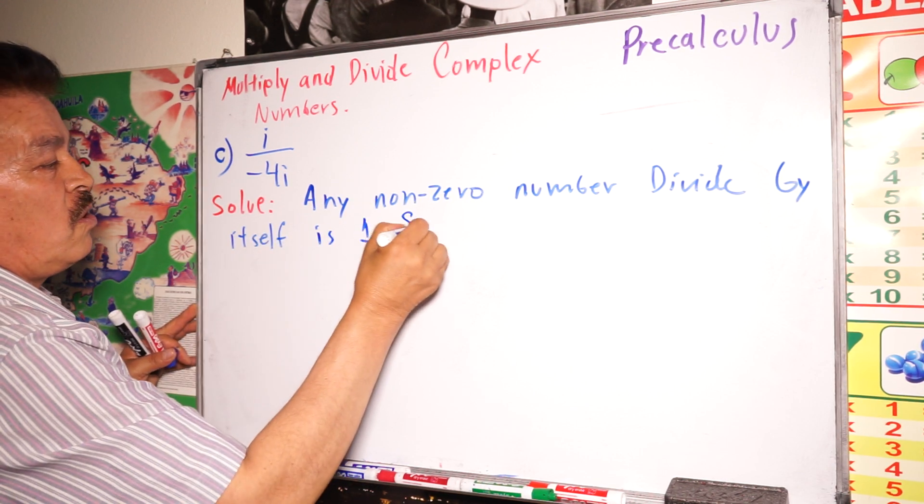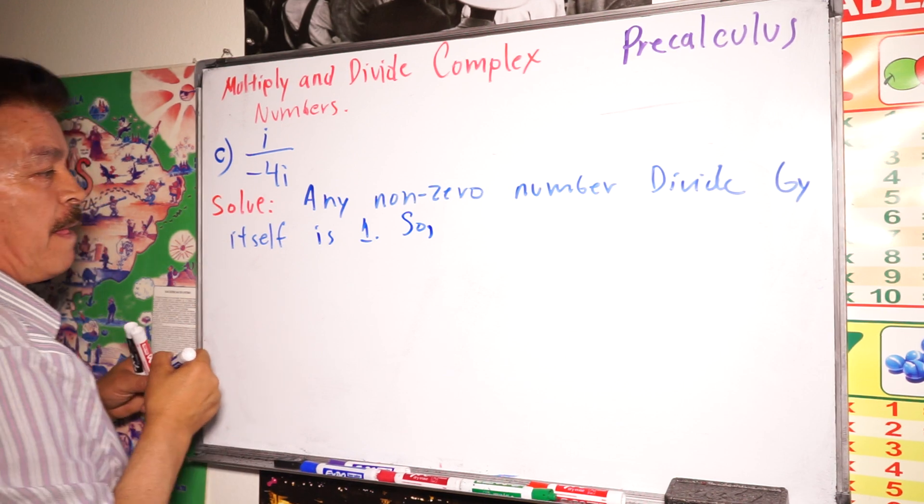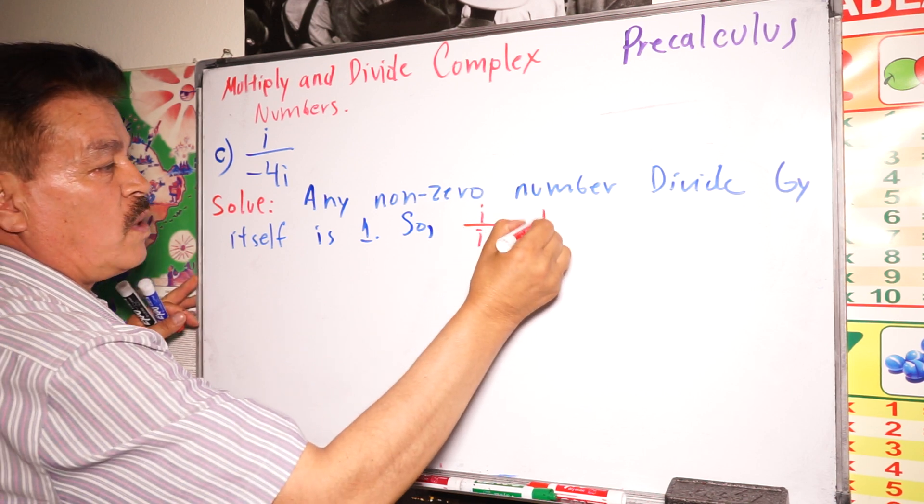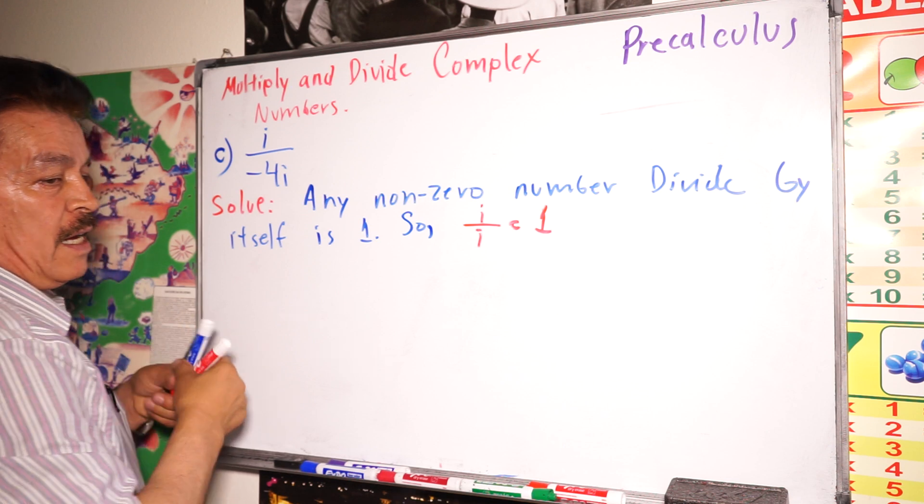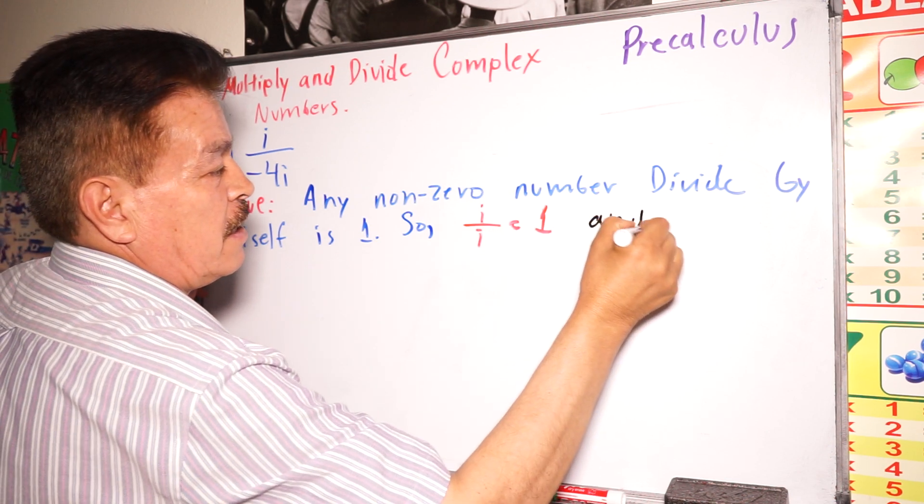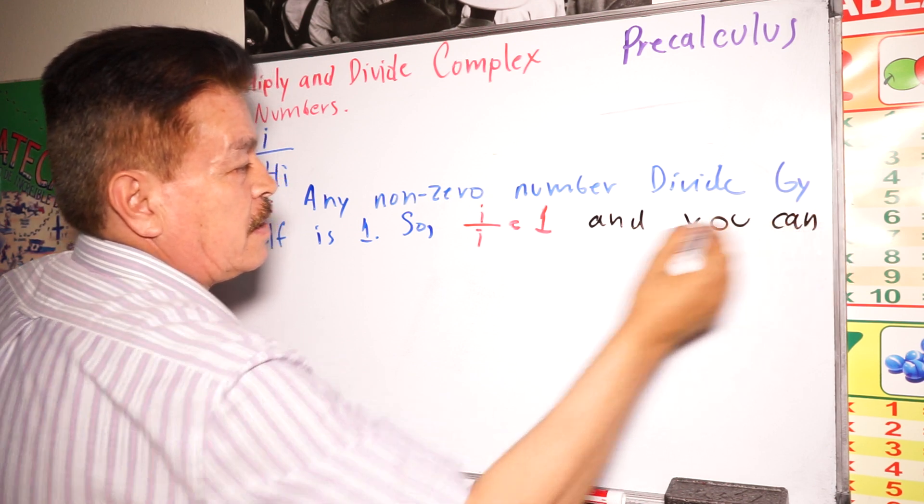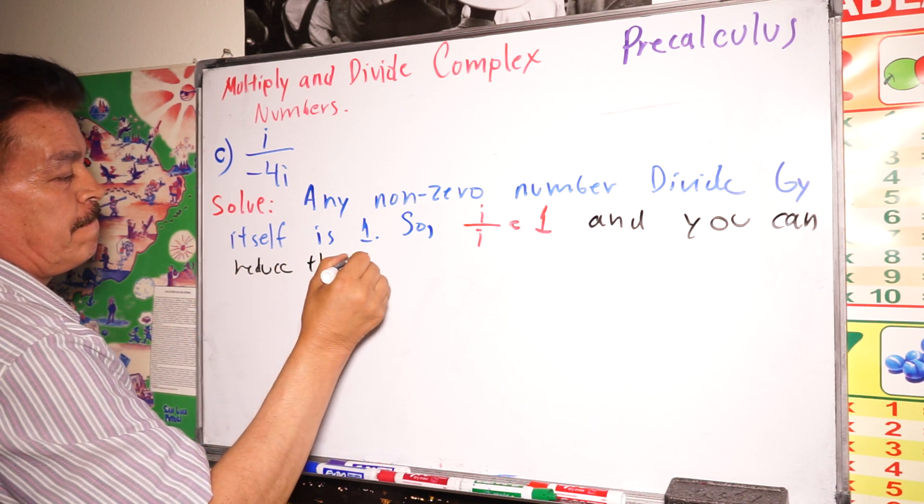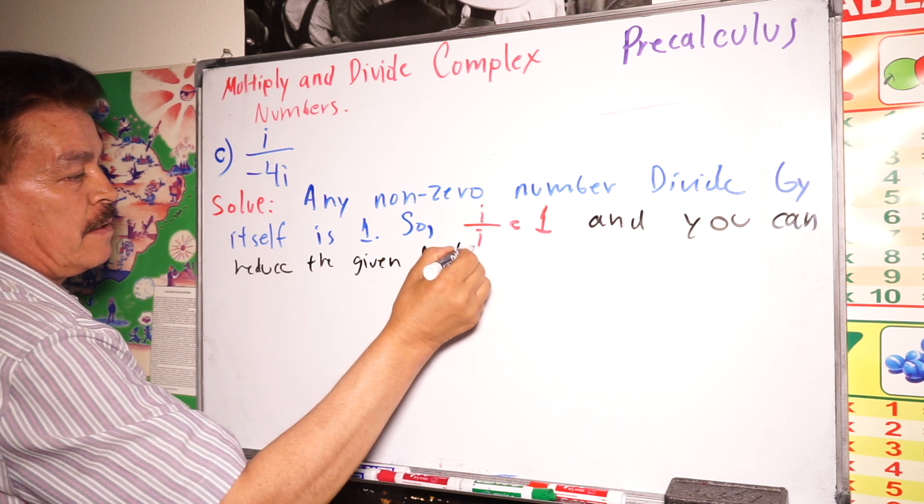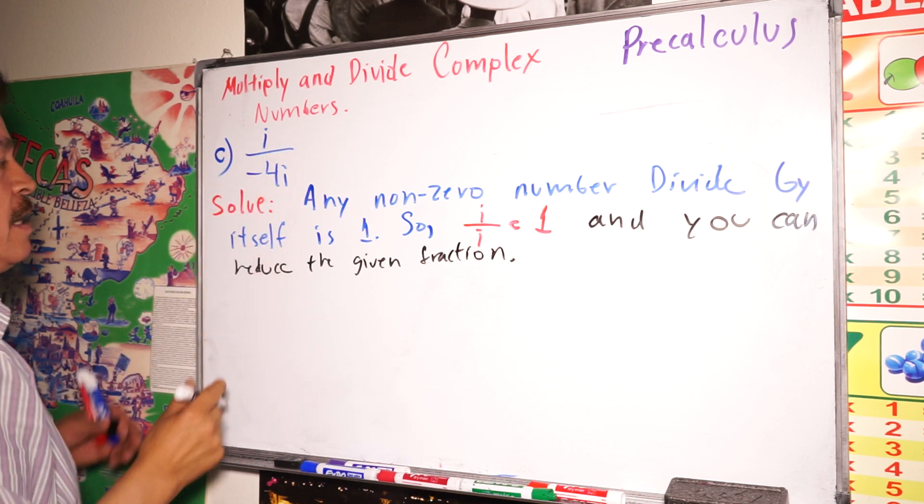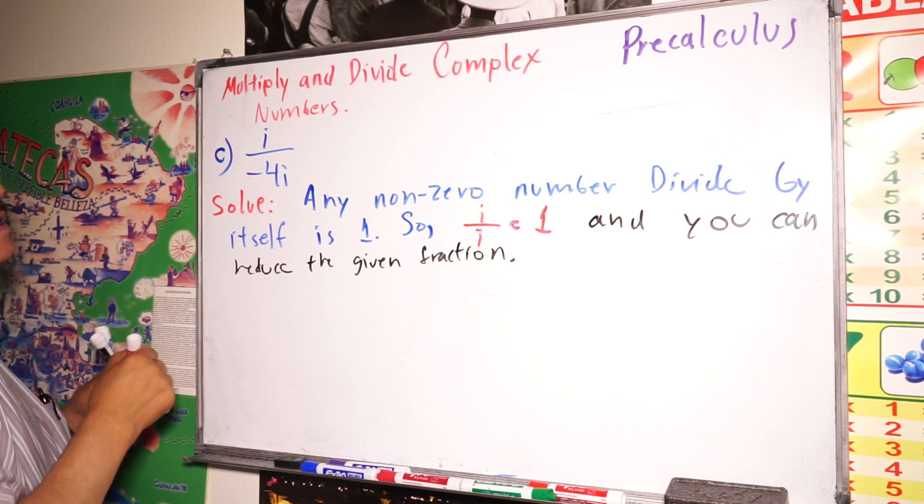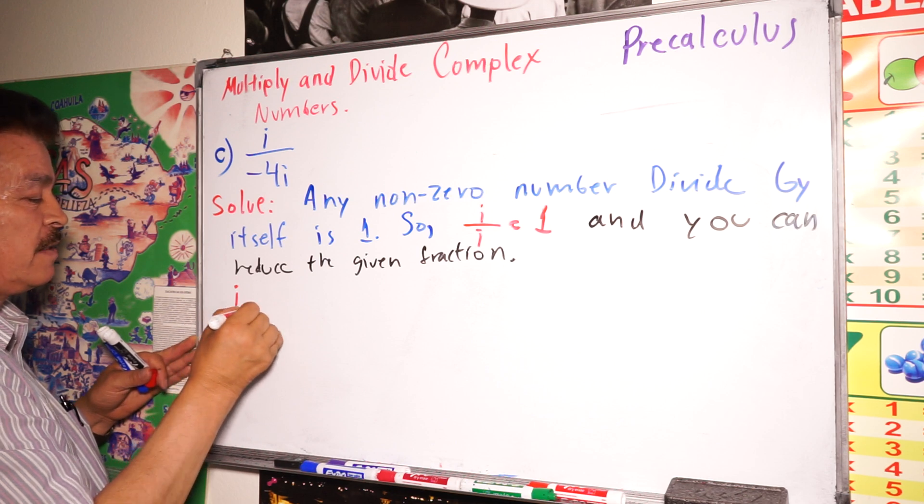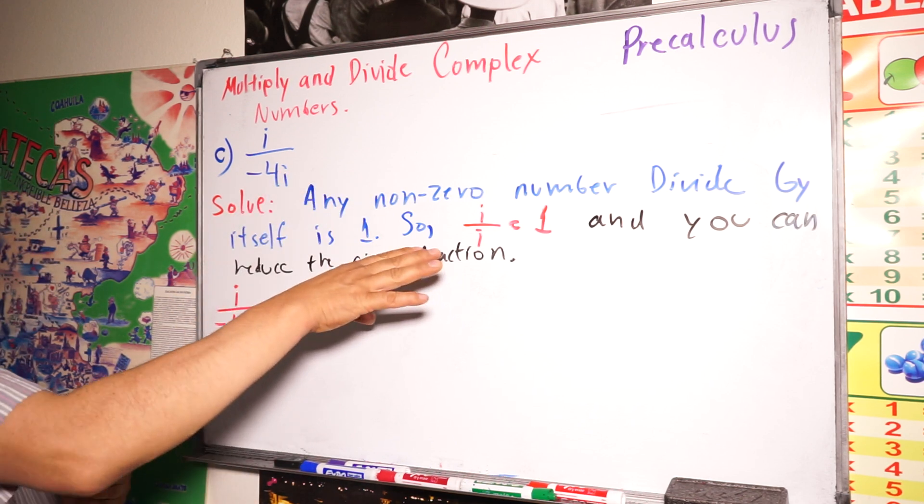Here, i divided by i is equals 1. And you can reduce the given fraction. This is our problem here. Let's write this problem again. This is the division: i divided by negative 4i. Just follow this little rule.